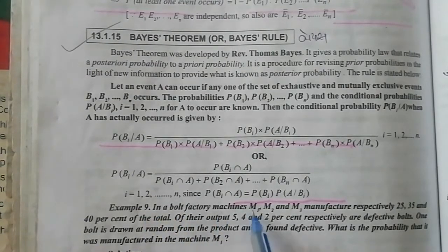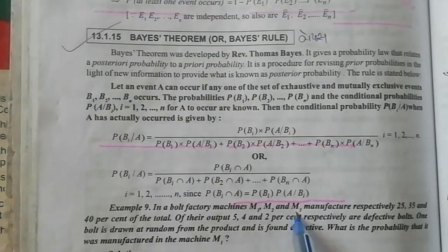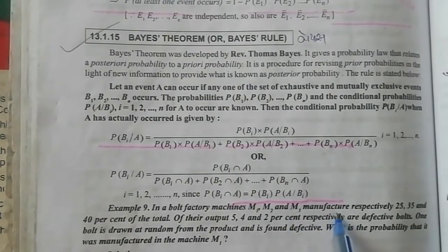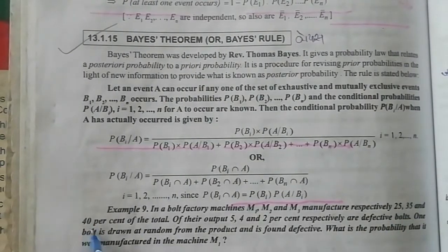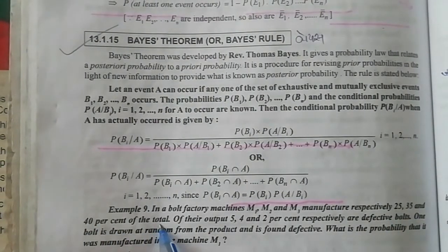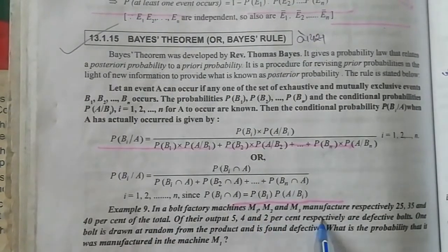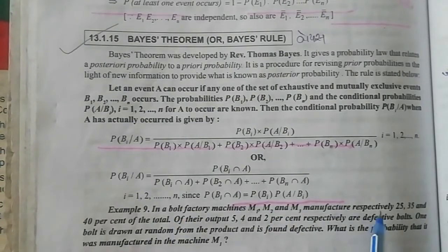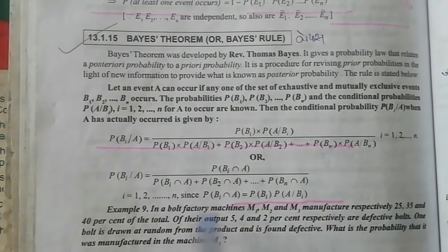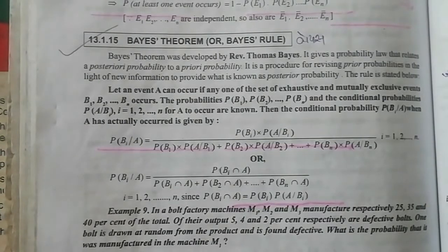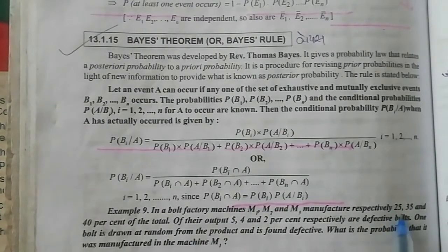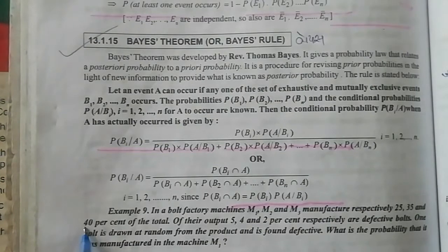In a bolt factory, machines M1, M2, and M3 manufacture respectively 25%, 35%, and 40% of the total output. That means in one factory there are three machines that manufacture bolts, and their outputs are 25%, 35%, and 40% — equivalently 25/100, 35/100, and 40/100. These correspond to events B1, B2, and B3.